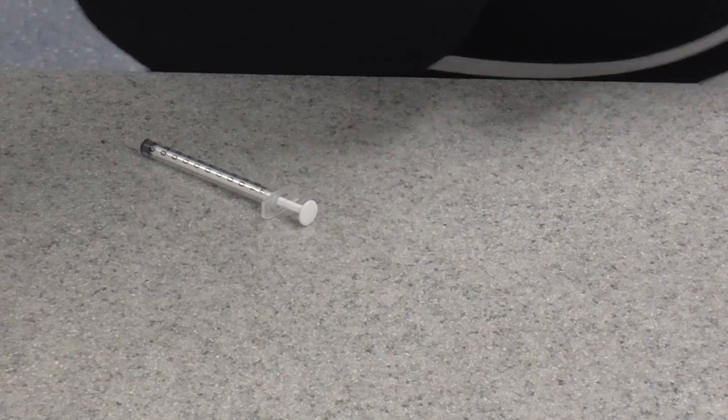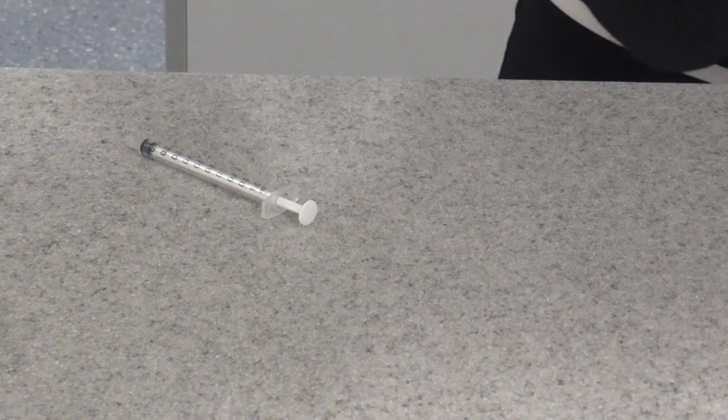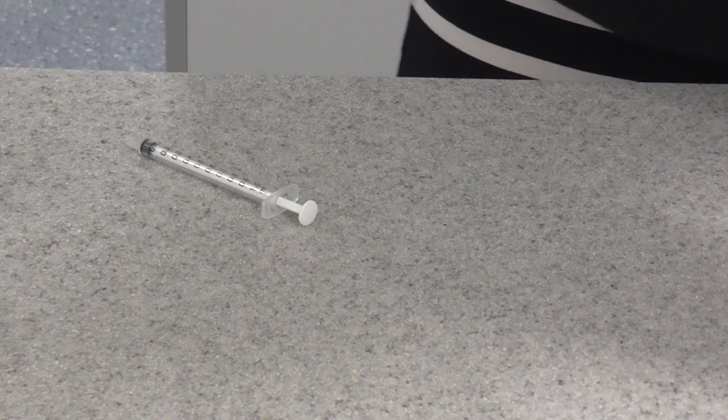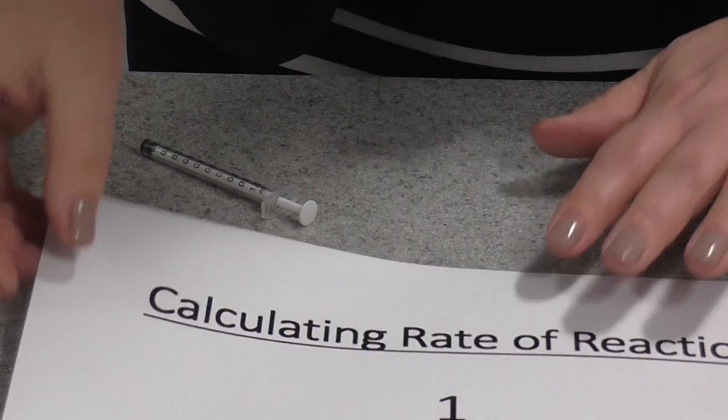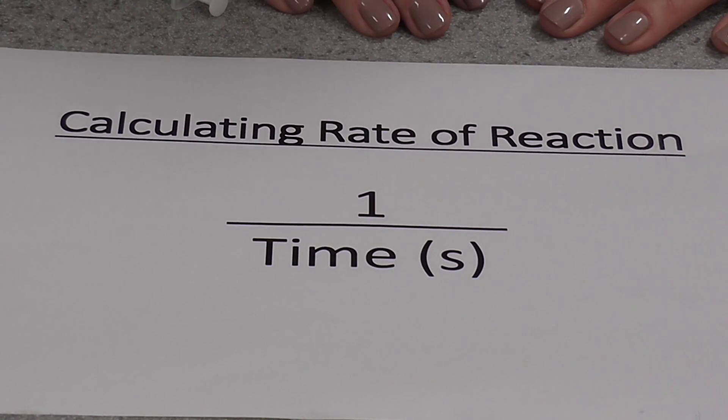What are we going to do with those results? As soon as we've got the result of that experiment, we should actually repeat it at several different temperatures. And once we've got all of our results for a number of different temperatures, we can actually calculate the rate of the reaction.